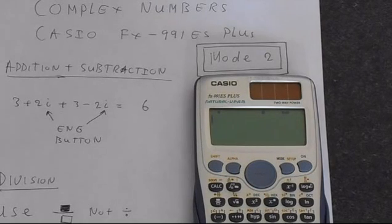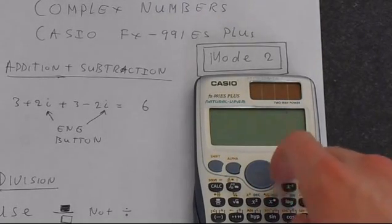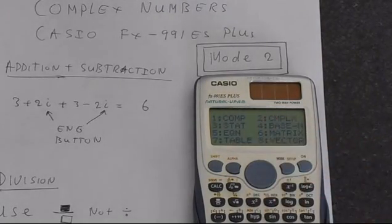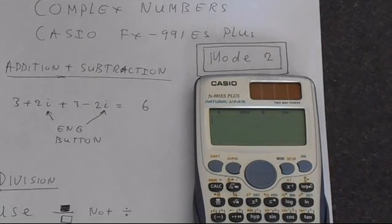To access the complex number mode, simply press mode, and then 2, that's got complex next to it. Mode 2 gets you into this. When you're in this mode, you can use the number i.